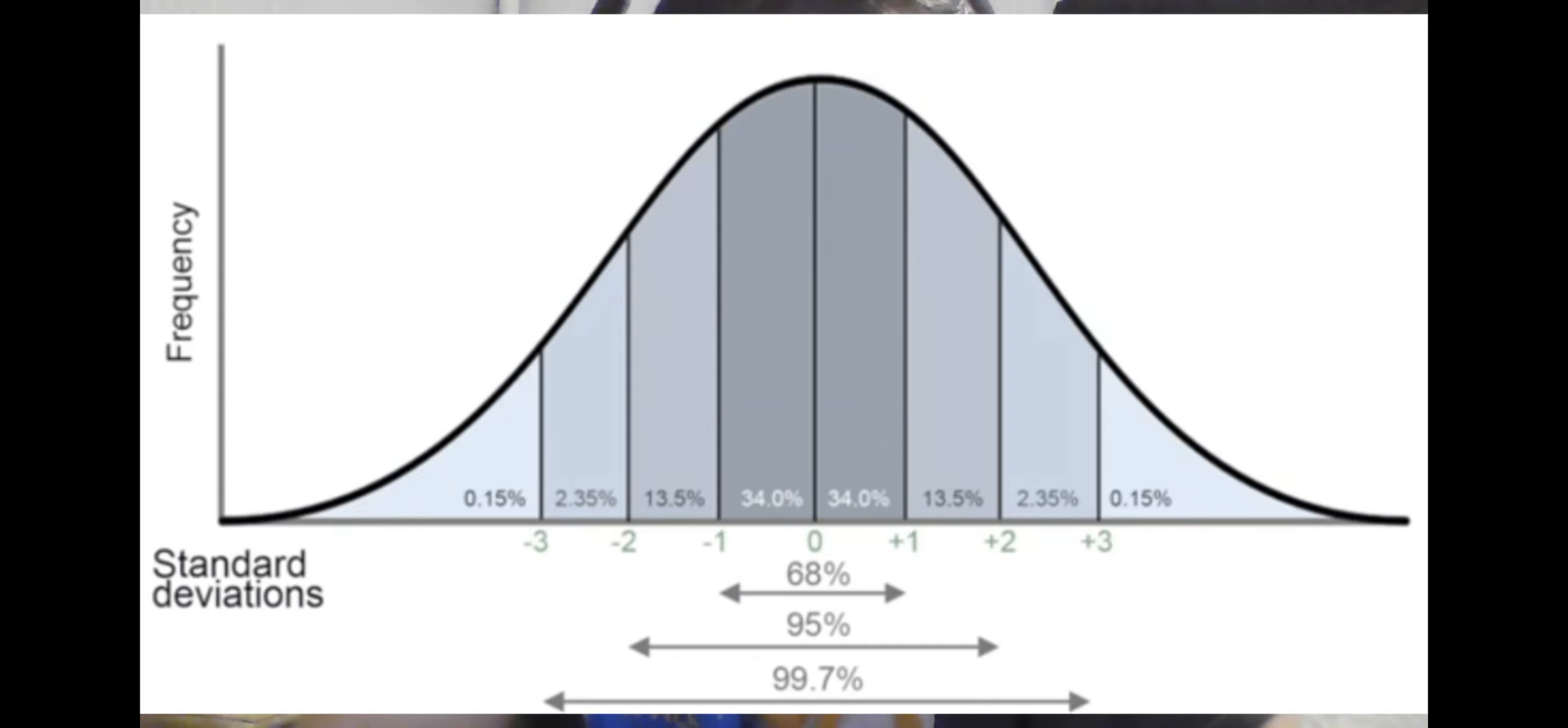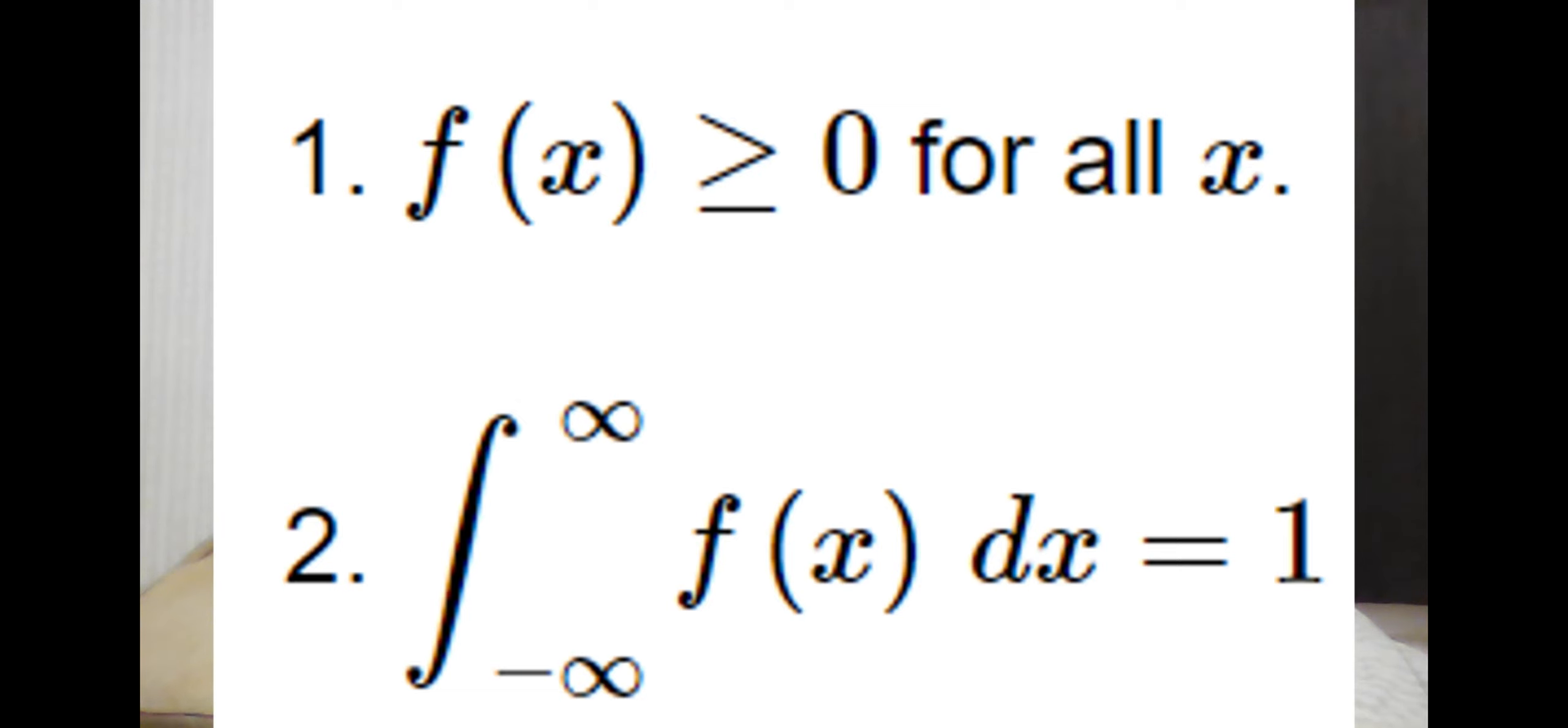Mathematically, probability density functions must satisfy two equations, which are: function of x must return a value greater than or equal to 0 for all x's, and that the integral from negative infinity to infinity of this function must be exactly 1.